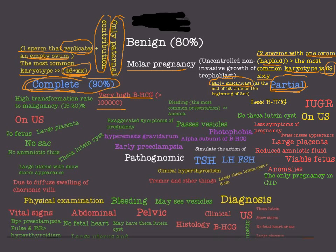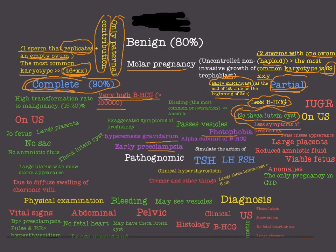Partial molar pregnancy is actually presented as early miscarriage in most cases, occurring at the end of the first trimester or at the beginning of the second trimester. In partial molar pregnancy we have less beta HCG than in complete molar pregnancy — in complete we have very high beta HCG, while in partial it is normal or slightly above normal. Therefore, we have no theca lutein cysts in partial molar pregnancy and no clinical hyperthyroidism.